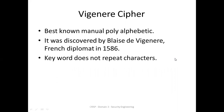As discussed in earlier videos, if the plain text gives you more than one ciphertext output, we call that a polyalphabetic cipher. Polyalphabetic ciphers achieve this either inherently through the algorithm, or with the introduction of an initialization vector — what's called the salt or nonce — converting a monoalphabetic cipher into a polyalphabetic one.